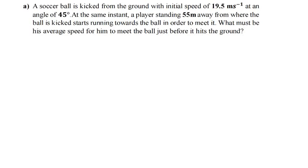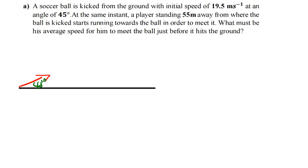It is very important to understand the question, then come up with a free body diagram, see what data you have and what is missing, and then start applying formulas. The free body diagram shows a ball being kicked from a point, going up at an angle of 45 degrees, reaching a certain height, and landing somewhere. The angle is 45 degrees and the initial speed is 19.5 meters per second.